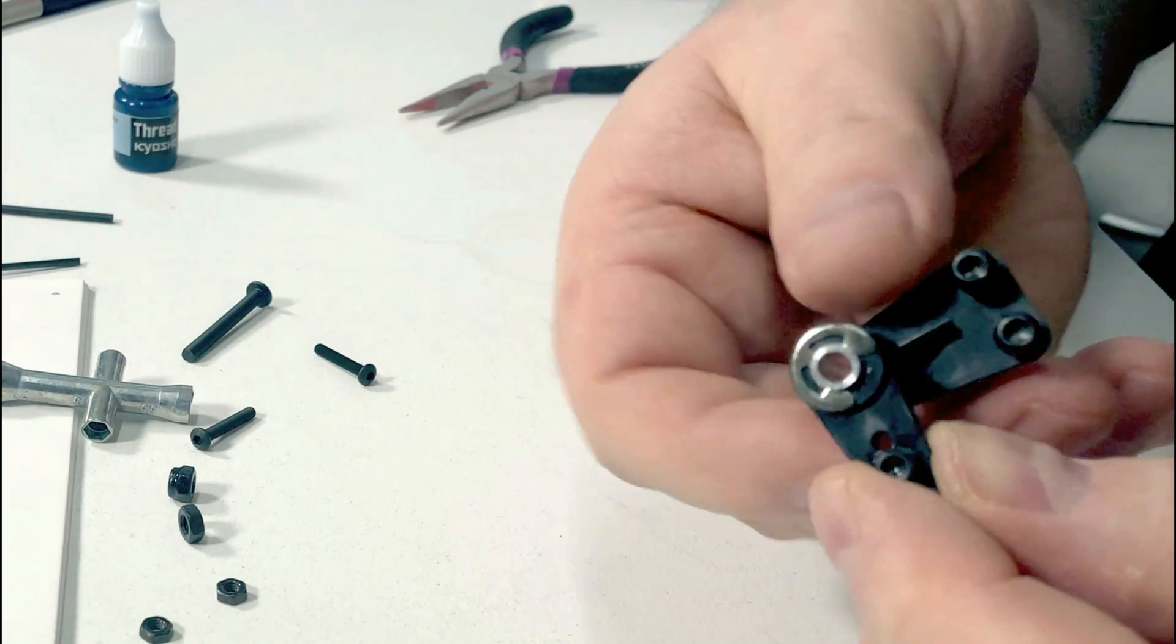Turn them up pretty tight, nip them up a little bit. Still moving free. Now we can just do up the screws in the bottom, make sure they're tight. There we go, we can get on to the other one now. And that's our rear arms ready to go.